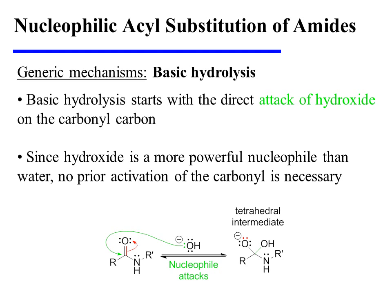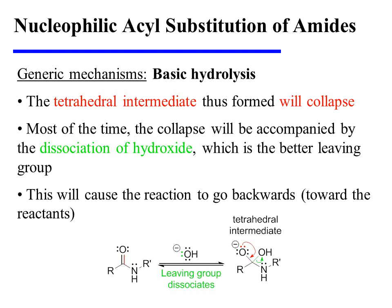Basic hydrolysis of an amide begins with the direct attack of hydroxide on the carbonyl carbon. Since hydroxide is a more powerful nucleophile than water, no prior activation of the carbonyl is necessary. And this attack displaces the pi-bonding electrons onto oxygen to yield a tetrahedral intermediate. The tetrahedral intermediate thus formed will collapse, and most of the time this collapse will be accompanied by the dissociation of hydroxide, which is the better leaving group. And this will cause the reaction to go backwards, toward the reactants.